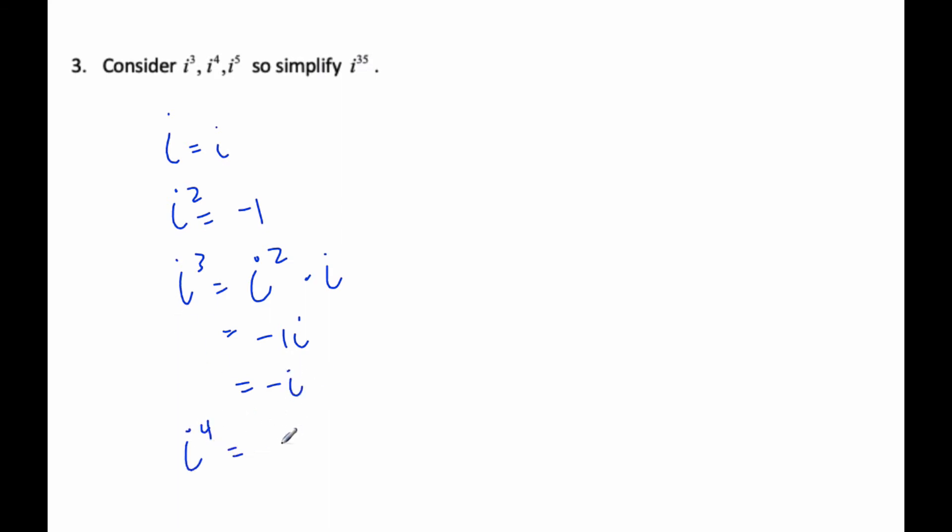i to the fourth, well, I know i to the fourth is just i squared times i squared, which is negative one times negative one, which is positive one.